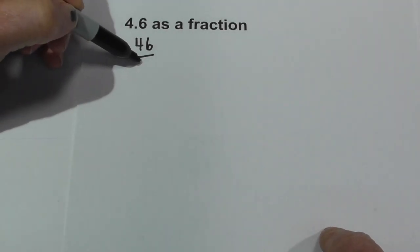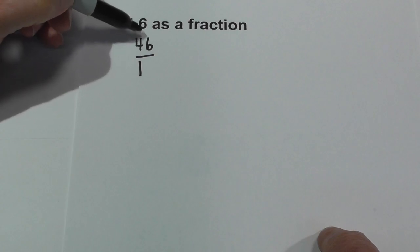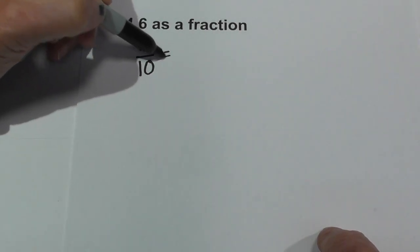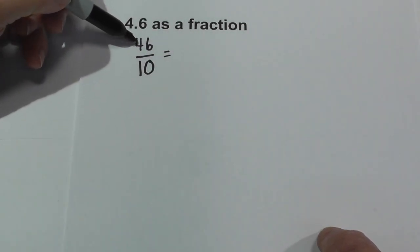But I think the easiest thing is just write a 1 and then count how many numbers are to the right of the decimal and write a 0 for each of those. So now what we need to do is we have an improper fraction. 10 can go into 46.